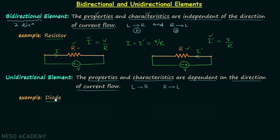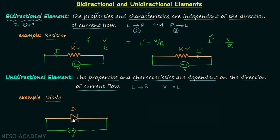To understand why a diode is a unidirectional element, I have taken a diode and connected a voltage source with the positive terminal to the P side and the negative terminal to the N side. With sufficient voltage, the diode gets forward biased — the diode is forward biased when the P side is at the positive terminal — and therefore it offers very little resistance to current.